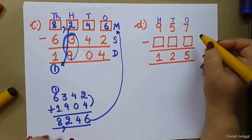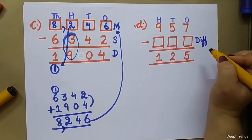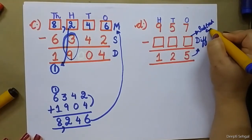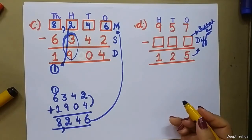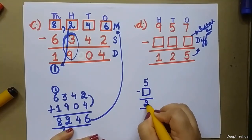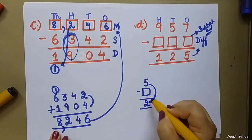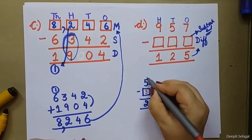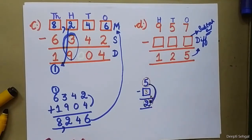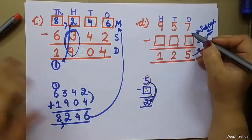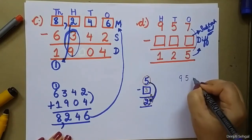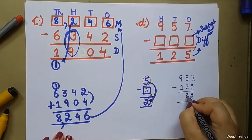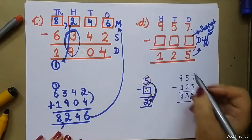Now let's move to the next question — now we have to find the subtrahend. To find the subtrahend, what do we do? We subtract the difference from the minuend. So 5 minus something gives 2; we subtract 2 from 5 and get 3. So we subtract difference from minuend. Here: 957 minus 125. 7 minus 5 is 2, 5 minus 2 is 3, and 9 minus 1 is 8. So our answer is 832.